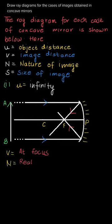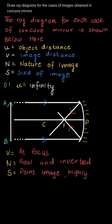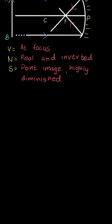The nature is real, as the real rays are meeting, hence the nature of the image will be real and inverted. The size — we can see that the image is very small, hence it is highly diminished.